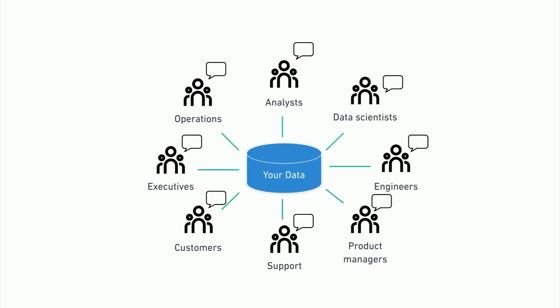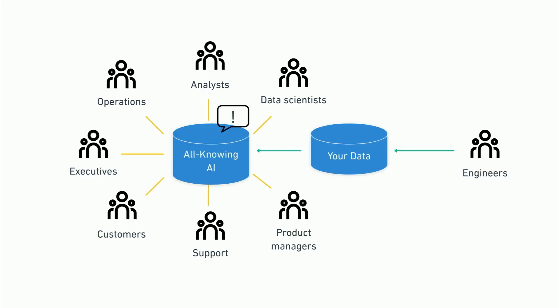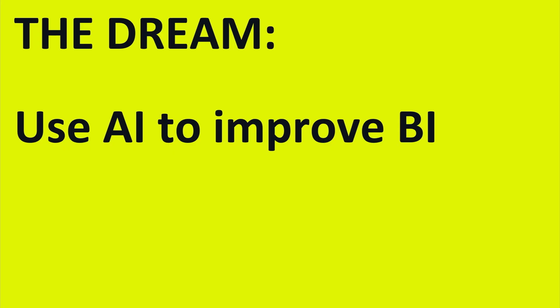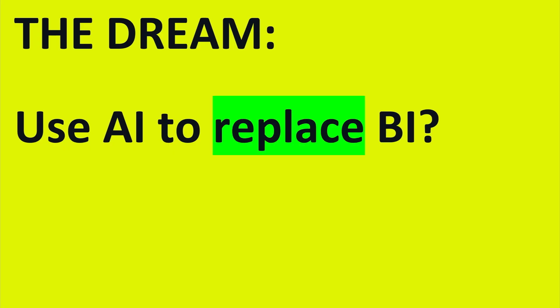But sometimes we think about it even a step further. Maybe you don't have to ask these questions at all anymore. Maybe you can pipe your data into your all-knowing, omnipotent AI in the center, and it'll give you the answers to your questions before you even have to ask. Maybe we're not just improving BI — maybe we're going to replace BI with AI. It's maybe a bit a step too far for me, but it's kind of the ultimate goal.